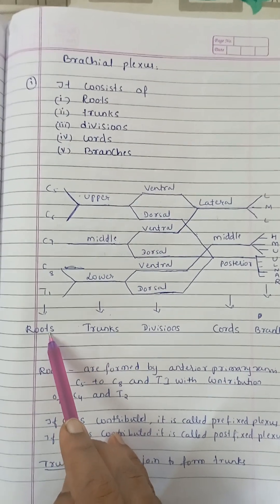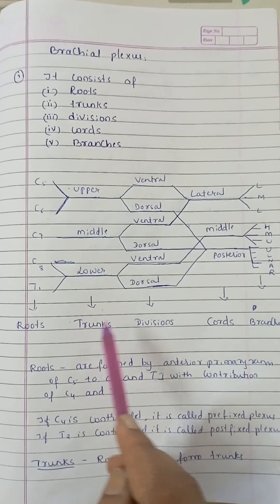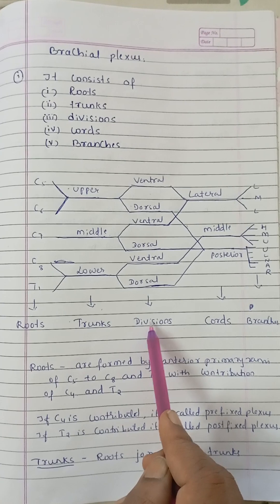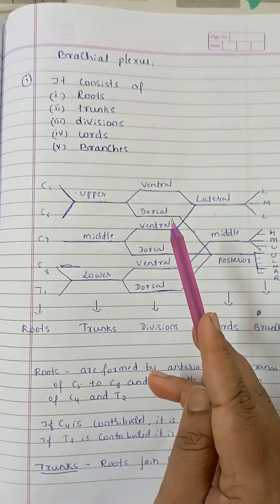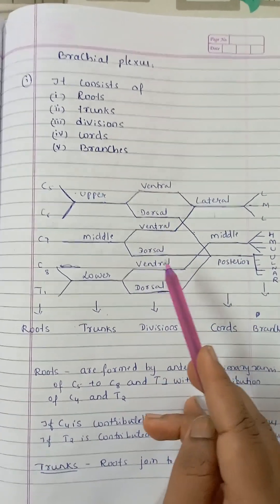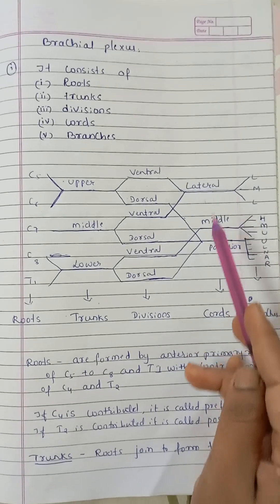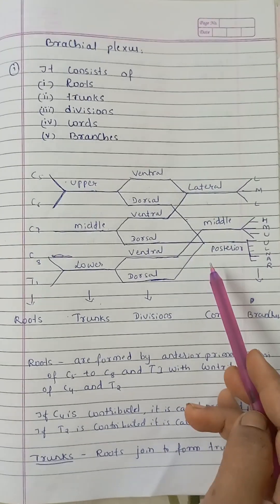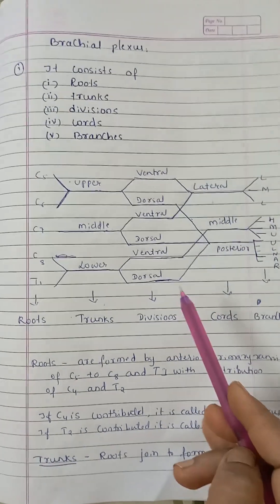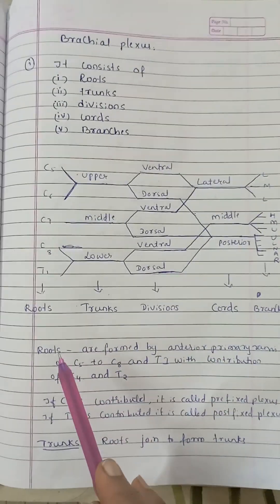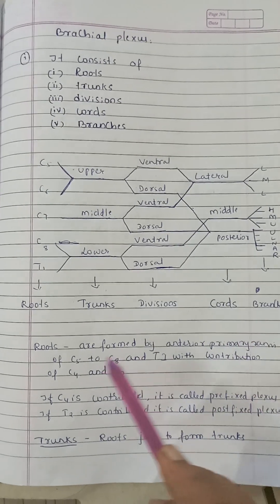In summary: roots are five, trunks are three (upper, middle, lower), divisions each divide into ventral and dorsal, cords are three (lateral, medial, and posterior), and these give rise to the branches. The roots are formed by the anterior rami of C5 to T1.